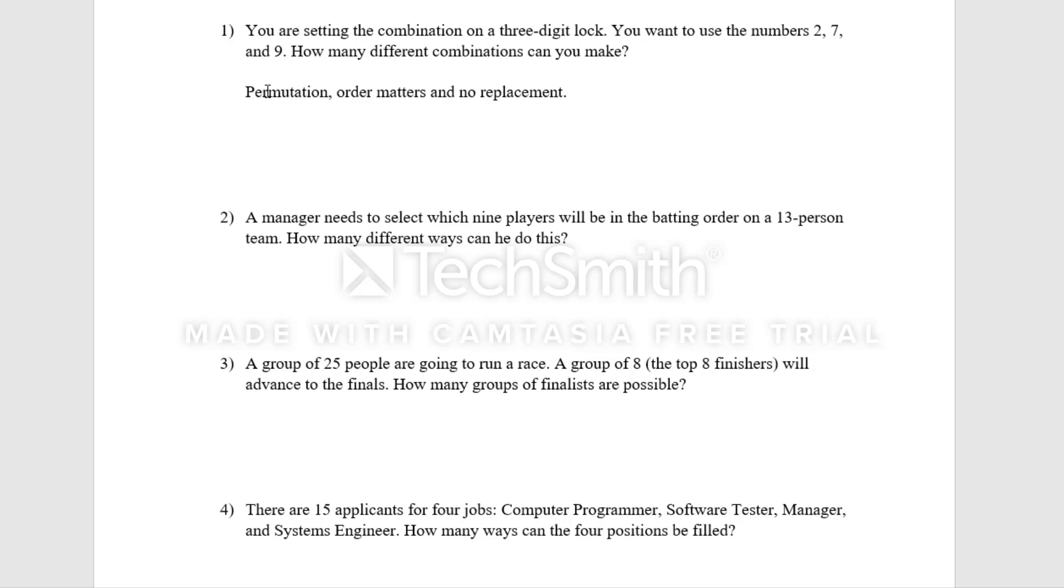The next thing we do is figure out how many options are available and how many things we actually choose. So from the problem, we know that we only have three options available: two, seven, and nine. So n is three. And then the number of things we're actually choosing is three as well, because we are setting three-digit locks. So we're going to choose three of those available numbers.